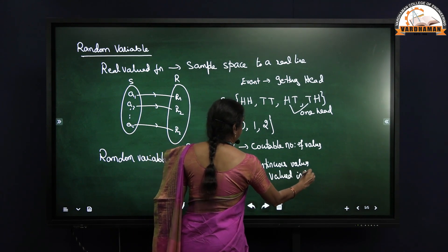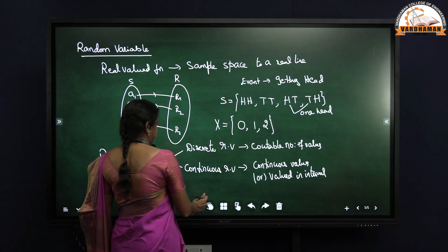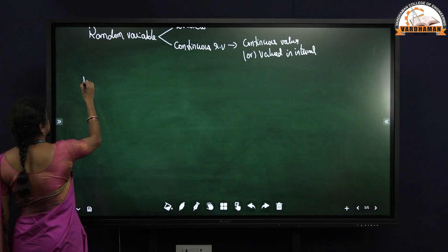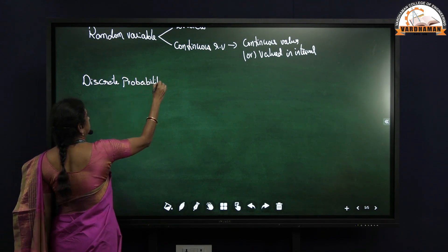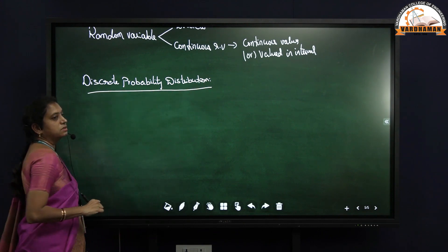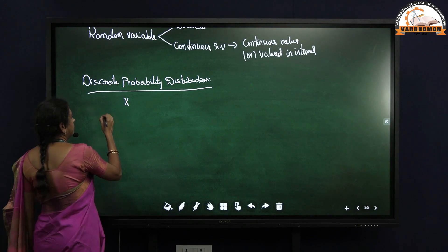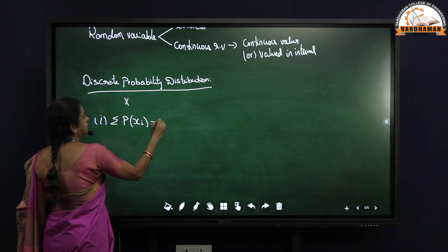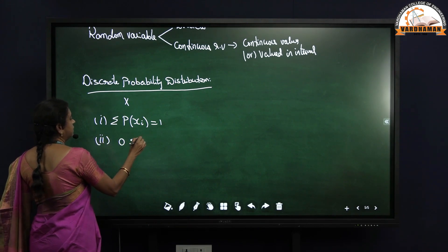The continuous random variable takes continuous values, or values in an interval. In this video, we are going to discuss about the discrete random variable, that is discrete probability distribution. This discrete probability distribution is defined for a discrete random variable. If we take X as the discrete random variable, then the discrete probability distribution should follow two conditions. First, the summation of probability of Xi should be equal to 1. Second, the probability value should lie between 0 and 1.